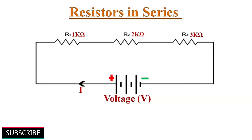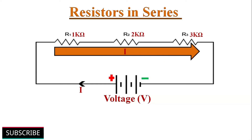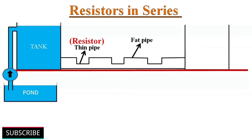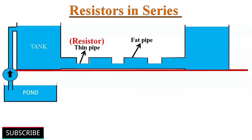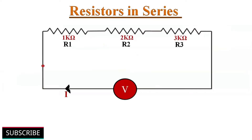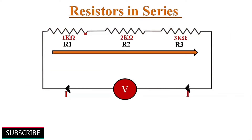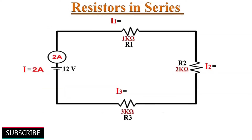Let us observe what happens when a few resistors with different values are connected in series with one voltage source. Here the current flowing through the circuit has no other way — it must pass through the resistors one after the other. Like water flowing from a filled tank to an empty container, we can consider water flow through thin pipes as current flow through series resistors. So in a series combination of resistors, the current that flows through one resistor must also flow through the other, as it can only take one path. Hence the current is the same.